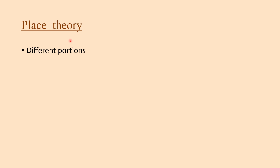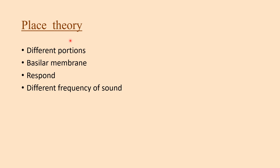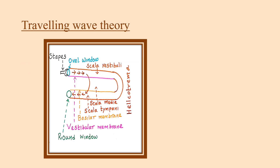The Place Theory is the most accepted theory. According to Place Theory, the cochlea analyzes the frequency of sound, with different portions of the basilar membrane responding to different frequencies. The basal portion of the basilar membrane responds to high frequency sounds, and the apical region responds to low frequency sounds.